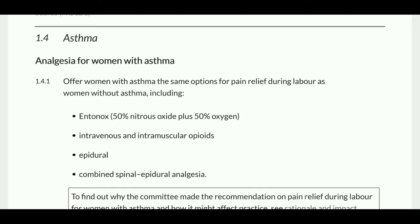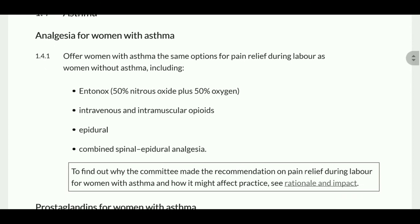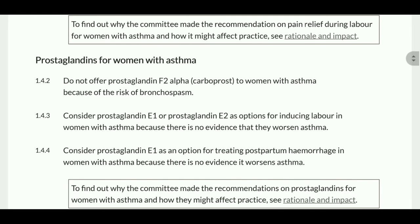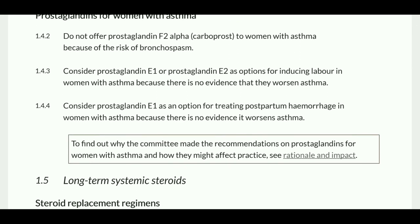Now regarding asthma: for analgesia for women with asthma, offer the same options for pain relief as women without asthma, including Entonox (50% oxygen and 50% nitrous oxide), intravenous and intramuscular opiates, and epidural, spinal, or combined spinal-epidural analgesia. For prostaglandins in women with asthma, do not offer prostaglandin F2 alpha due to the risk of bronchospasm. Prostaglandin E1 and E2 can be used as options for inducing labor in women with asthma as there is no evidence they worsen asthma. Prostaglandin E1 can also be used as an option for treating PPH in women with asthma.